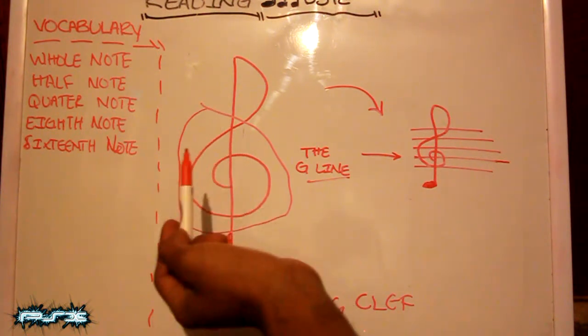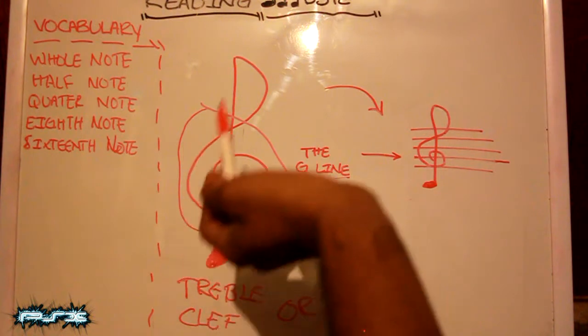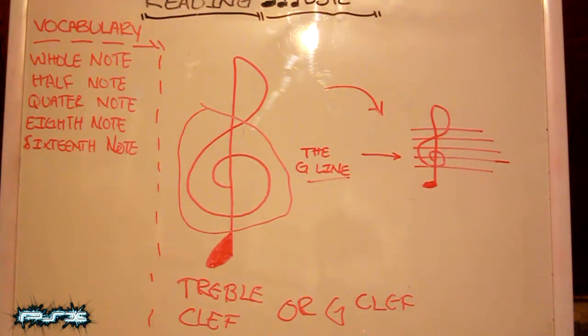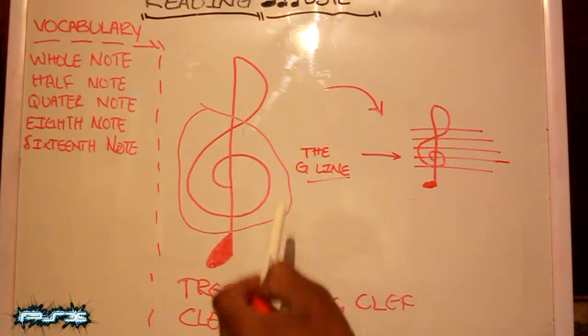So it looks like a G, right? For that purpose, that's what's called the G clef because it pretty much tells you where the G lies.